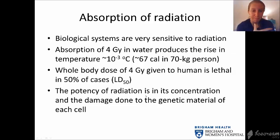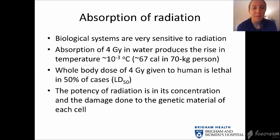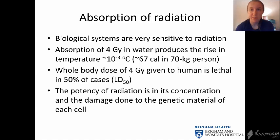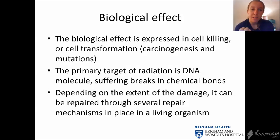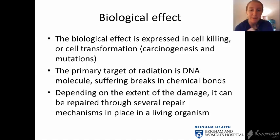Biological systems are very sensitive to radiation. Absorption of 4 Gy in water produces a temperature rise of only 10^-3 degrees Celsius — about 67 calories in a 70 kg person. Yet a whole-body dose of 4 Gy given to a human is lethal in 50% of cases — the LD50. The potency of radiation lies in its concentration and the damage done to the genetic material of each cell. The biological effect is expressed in cell killing or cell transformation — carcinogenesis and mutations. The primary target is DNA, which suffers breaks in chemical bonds, and depending on the extent of damage, can be repaired through several repair mechanisms in living organisms.